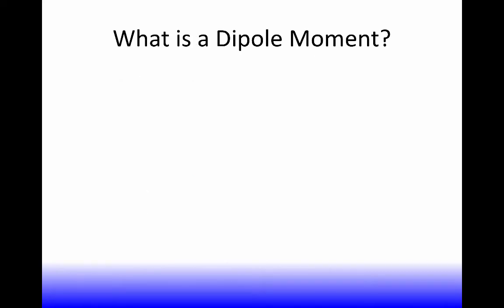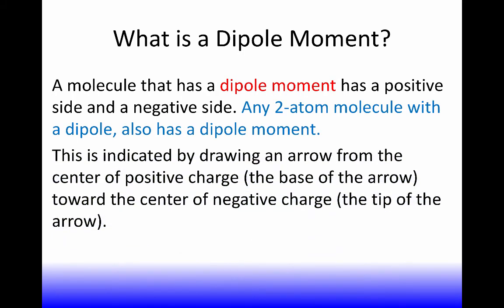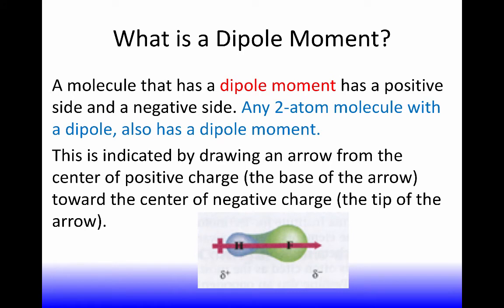What's a dipole moment? A dipole moment is the same as a dipole if you have a molecule with a positive side and a negative side. If you have a two-atom molecule that has a dipole, it automatically has a dipole moment. We indicate a dipole moment by drawing an arrow from the center of positive charge to the center of negative charge. In a two-atom molecule it's the same as the dipole. Here's a two-atom example: fluorine is delta minus, hydrogen is delta plus, and the dipole moment arrow is drawn from the hydrogen — the center of positive charge — towards the fluorine — the center of negative charge.